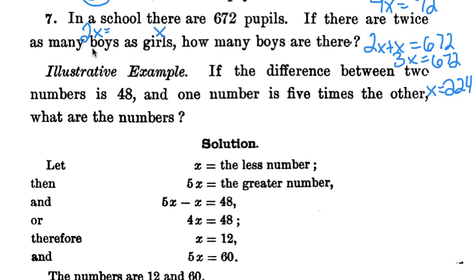We know x is 224, which gives us the girls. But we want to know how many boys there are. So we just take that into the 2x. 224 times 2 gives us 448. So we just write that to the side, boys, girls.